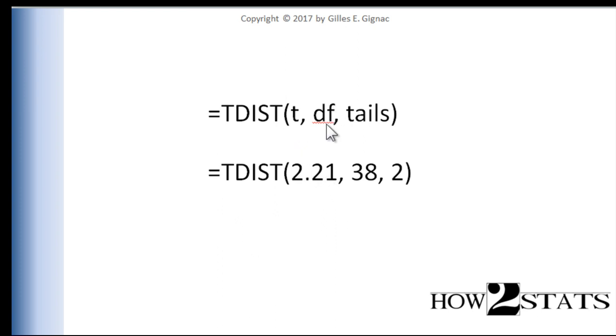And all you need to know, in addition to the T value, are the degrees of freedom, which are 38, n-2. The degrees of freedom associated with the Pearson correlation are always equal to n-2. And then tails, which is equal to 2. We want a two-tailed test.